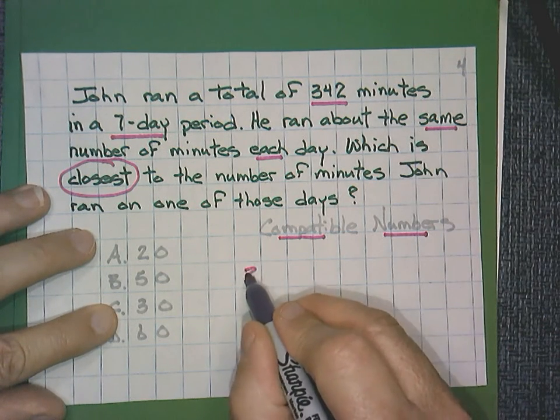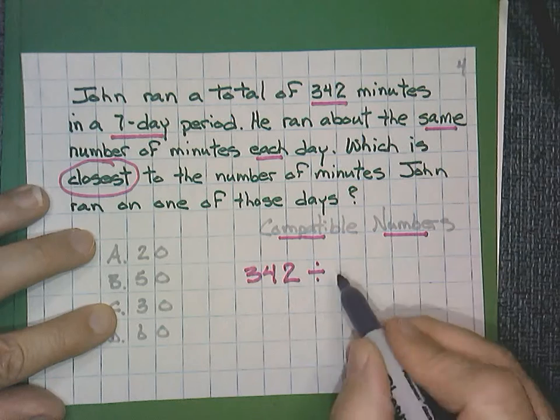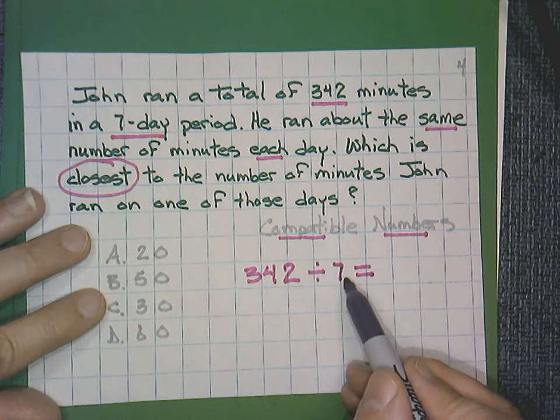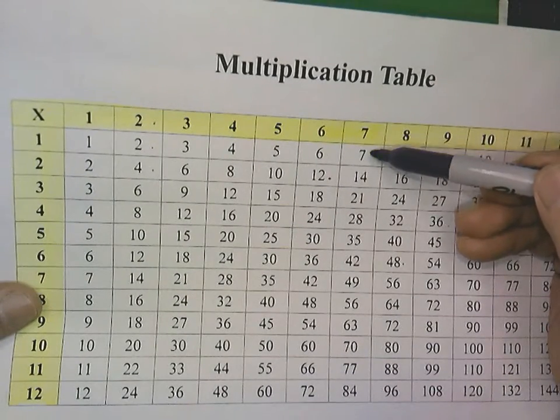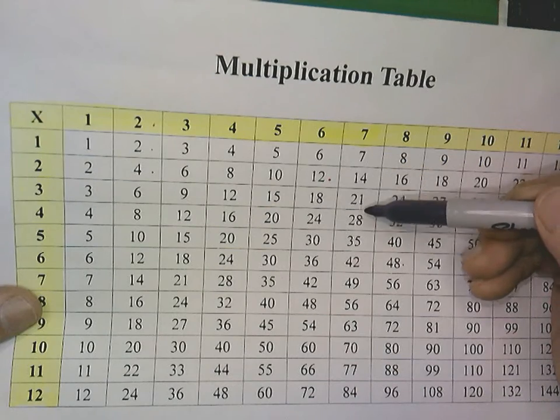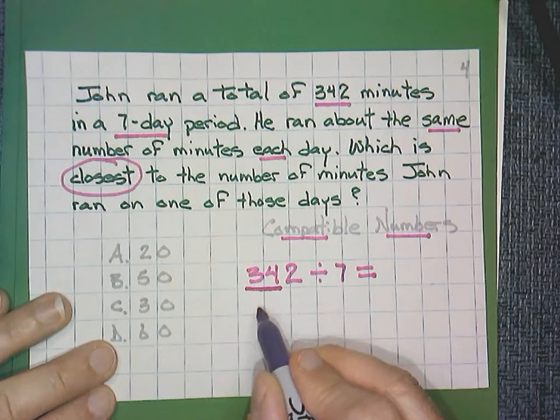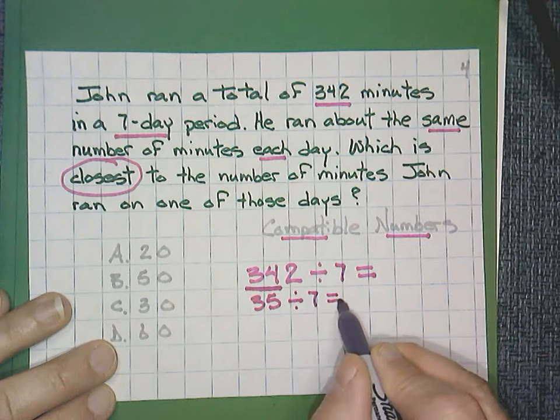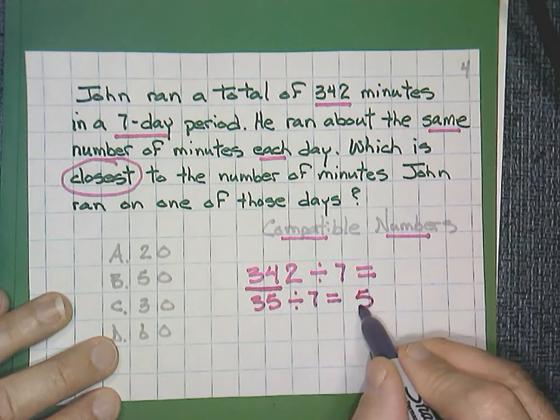I'm going to take my 342 and divide that by our 7. Now, a compatible number means a compatible number with 7. I look on my multiplication chart and get as close as I can to 34 would be the 35. That would be 1, 2, 3, 4, 5. So remember, I'm narrowing down and getting close to 34. We said on that chart that that would be 35. Now, we're going to divide 37, excuse me, 35 divided by 7 is equal to 5.